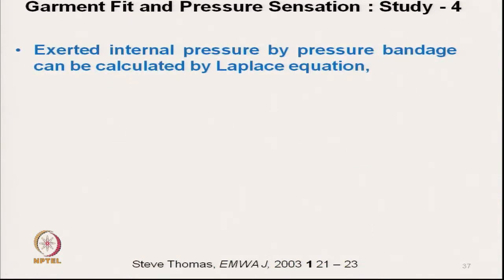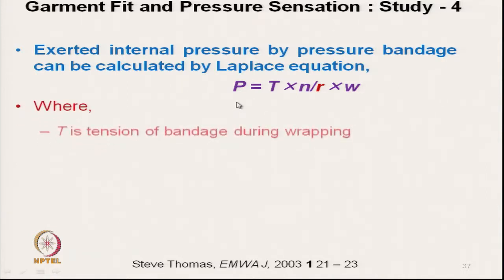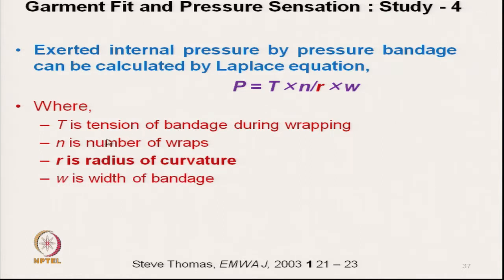This is proved by another study using the Laplace equation. In the Laplace equation, the pressure exerted by the garment is proportional to the tension of the garment or bandage wrapping — the study was on compression bandage. As the number of wraps increases, the pressure exerted on the body increases and is inversely proportional to the radius of curvature. A higher radius of curvature means less curvature and therefore less pressure.